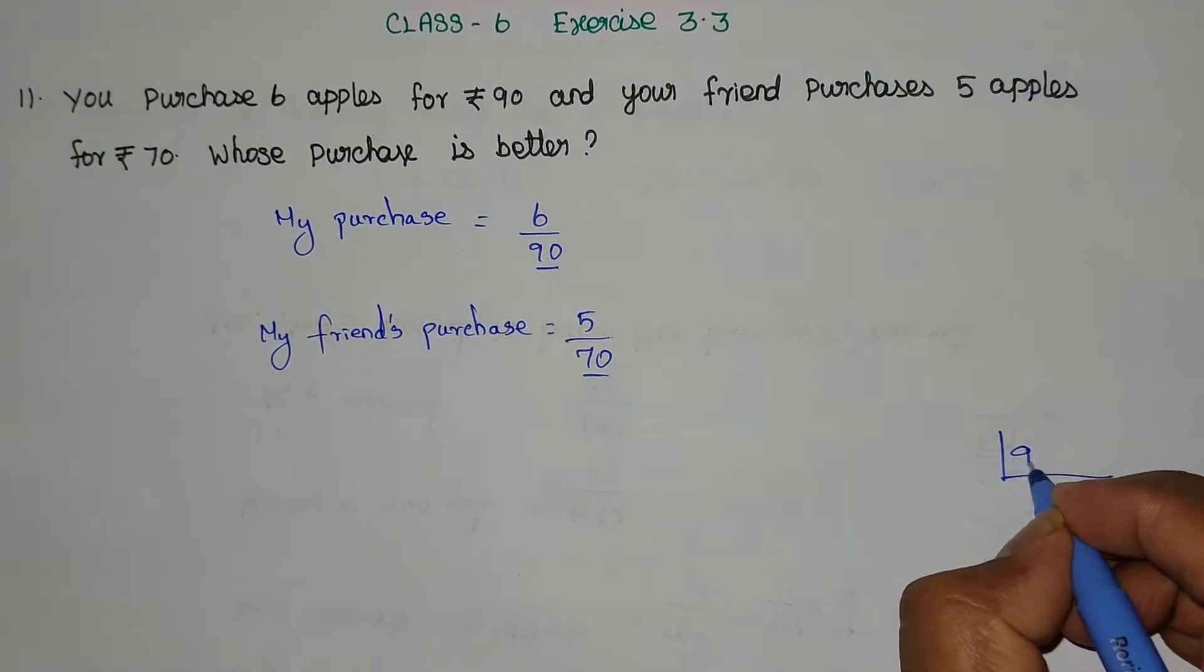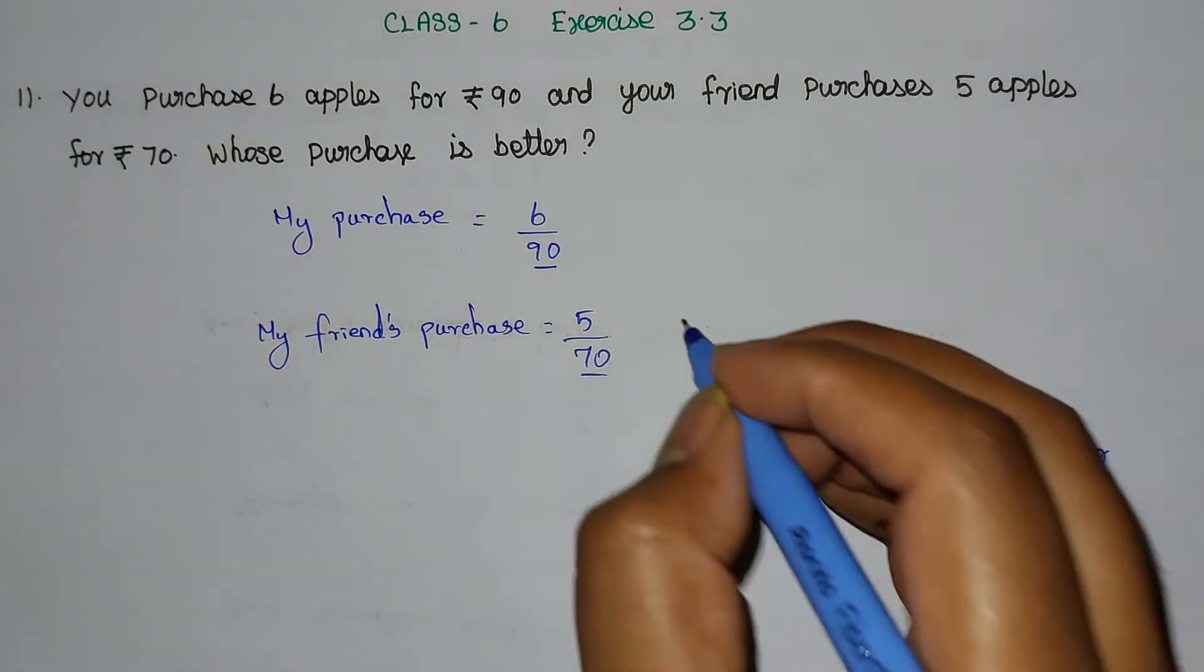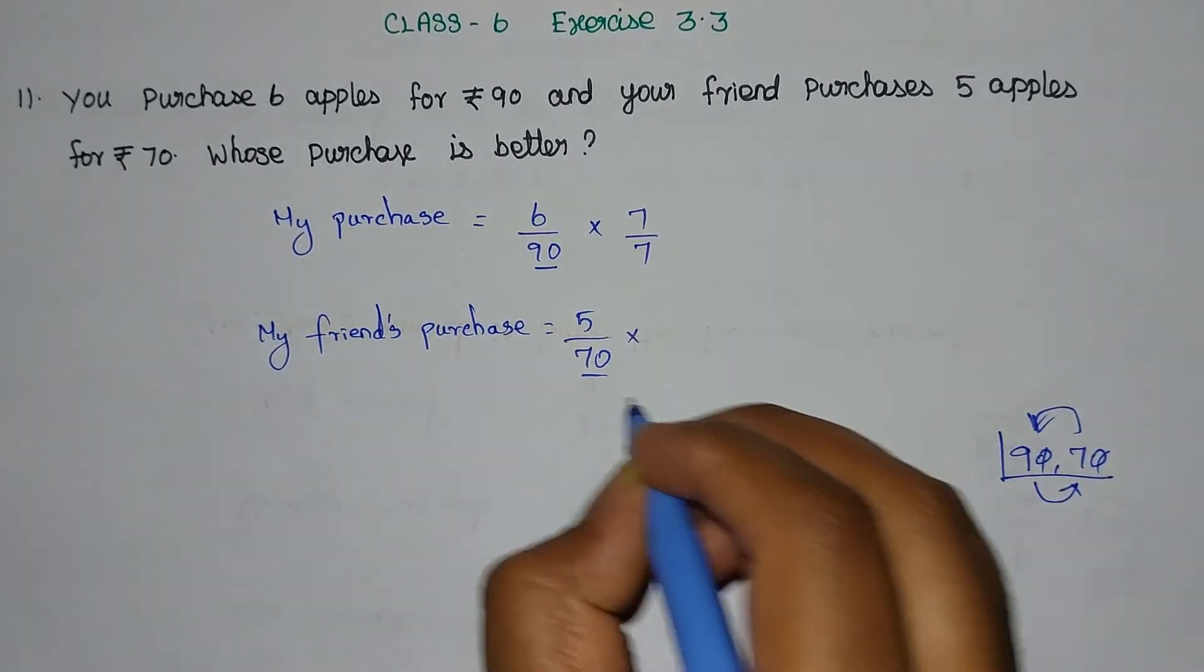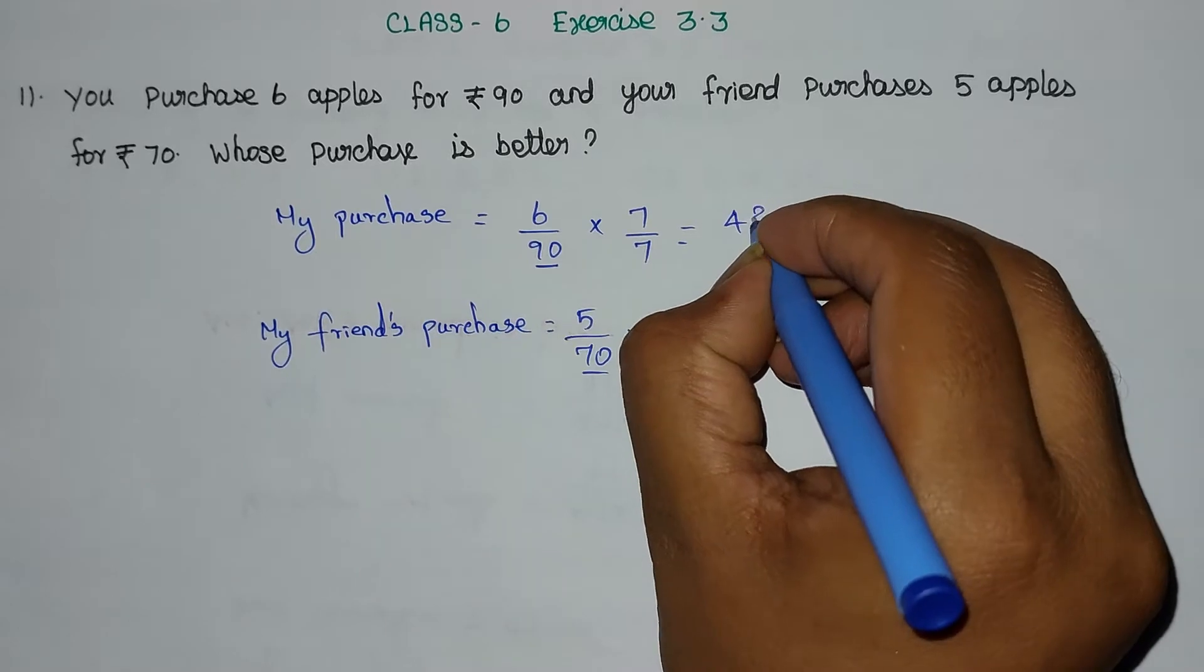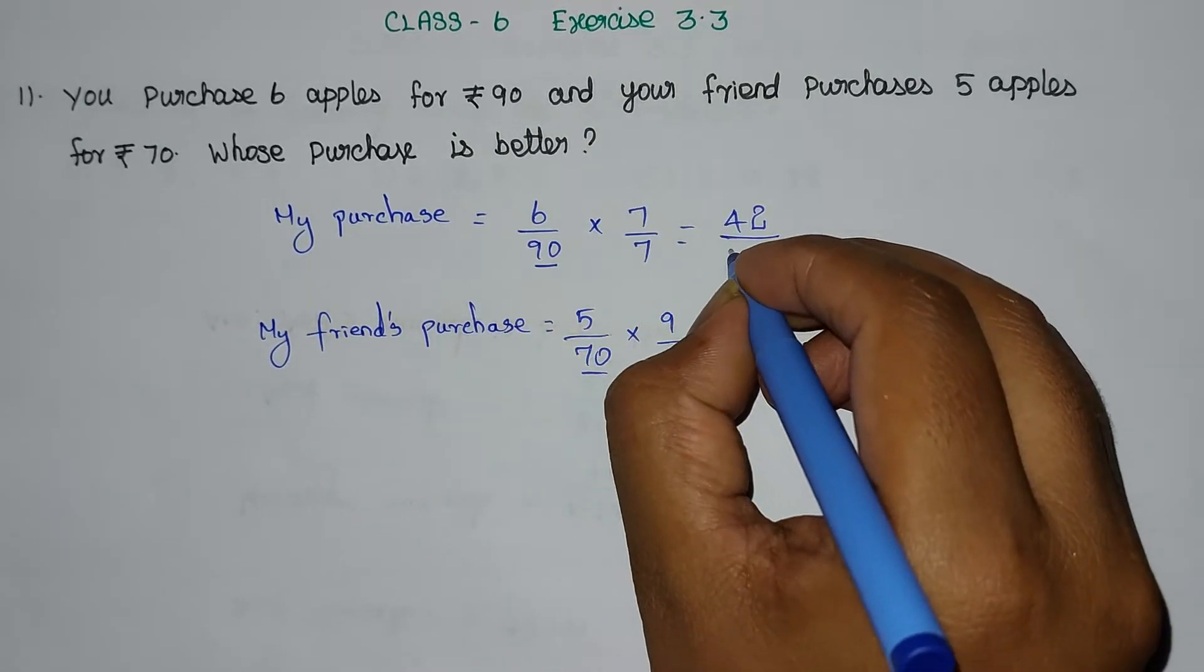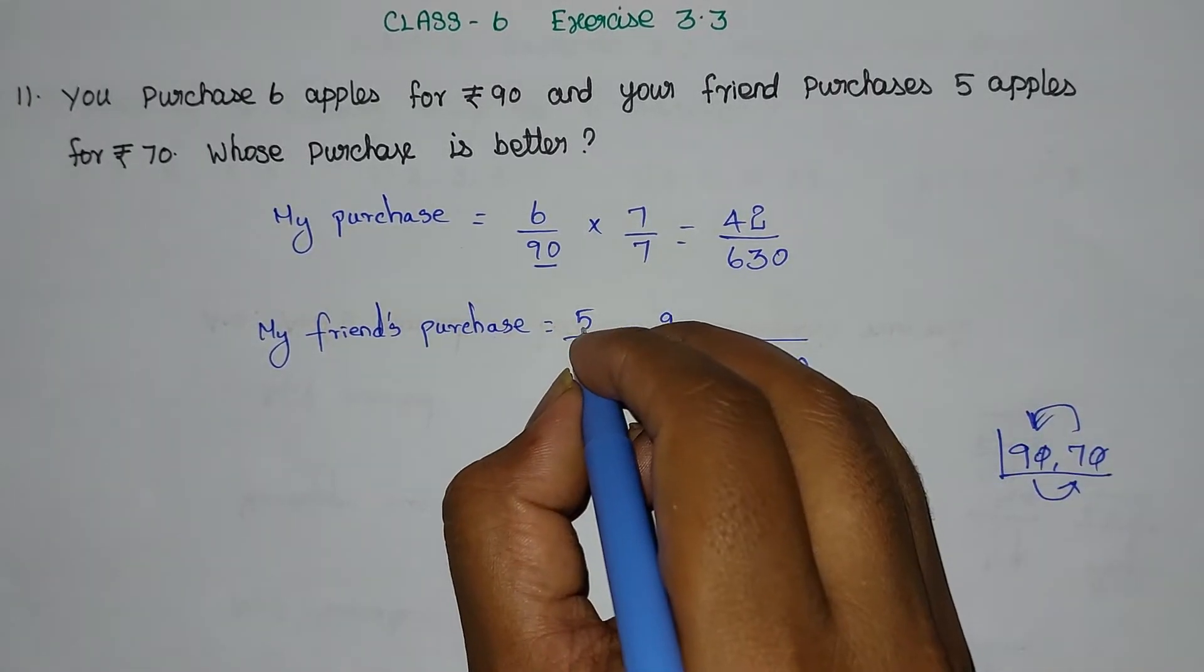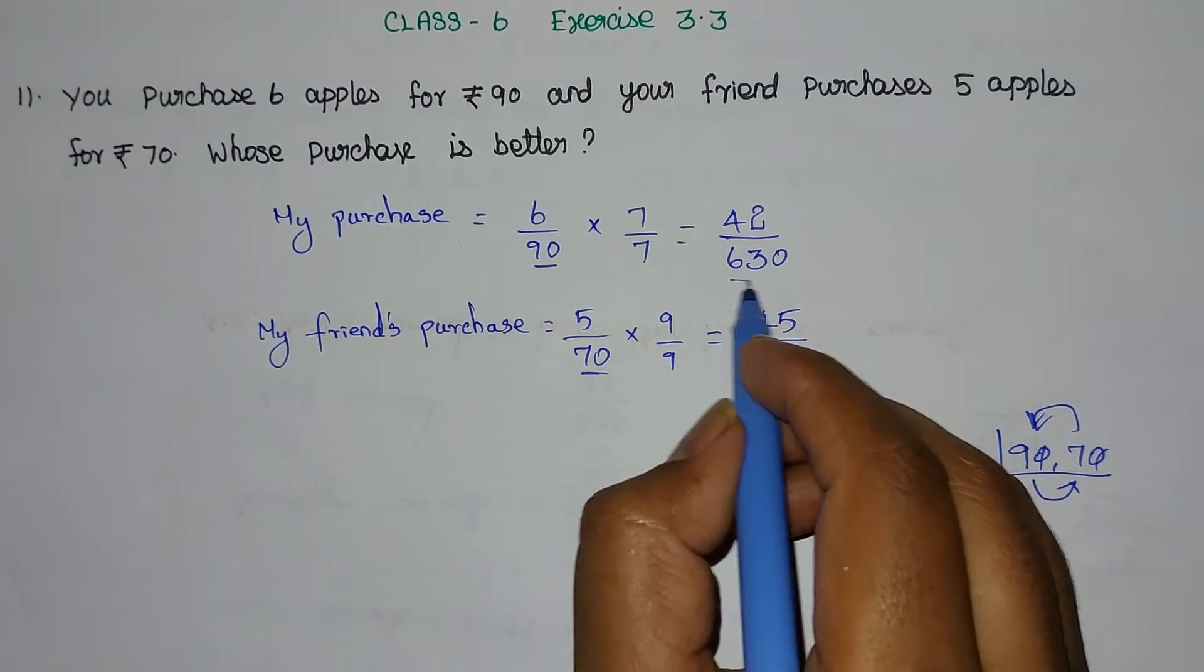We can cancel zeros, so this becomes 6 by 9 and 5 by 7. Now we multiply to get a common denominator: 9 times 7 equals 63. For my purchase: 6 times 7 equals 42 by 63. For my friend's purchase: 5 times 9 equals 45 by 63.